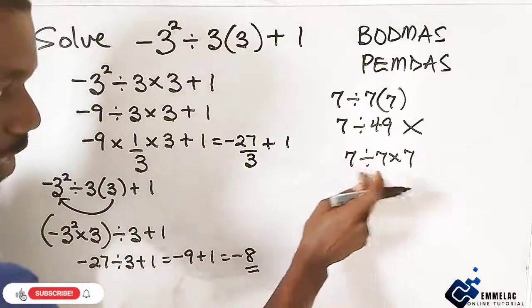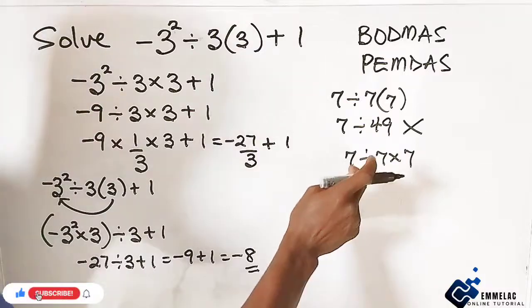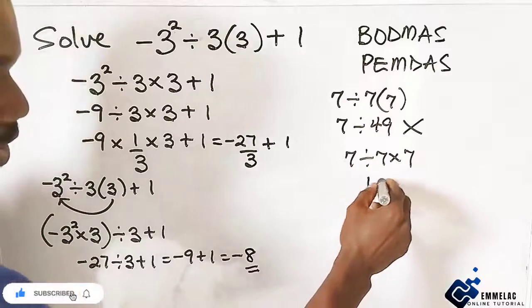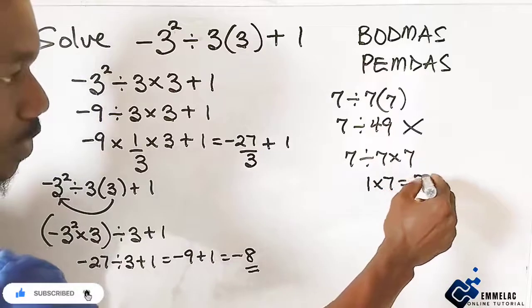Now either you divide through by this or you bring this you multiply this by this. So in that case we have what? 1 times 7. It was what? 7.